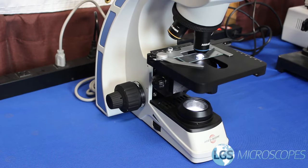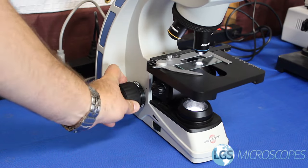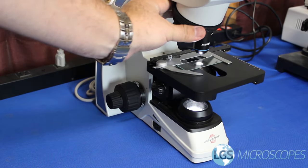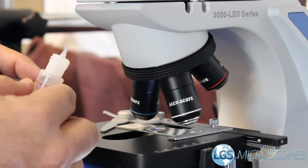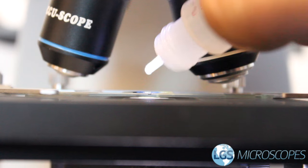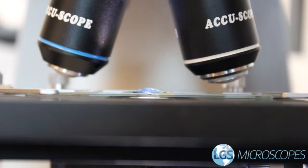When you're completely done looking at your sample under the 4x, 10x and 40x objectives, go ahead and lower your stage then move the objectives to where they're right in between the 40x and 100x objectives. Then you can add your immersion oil, just one generous drop.